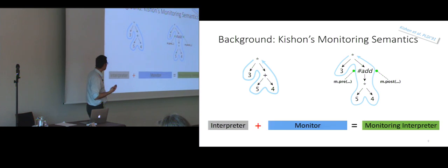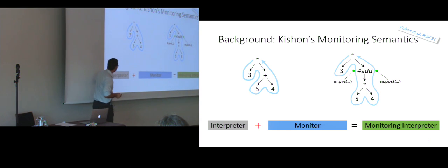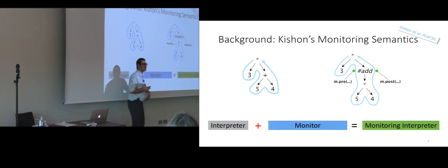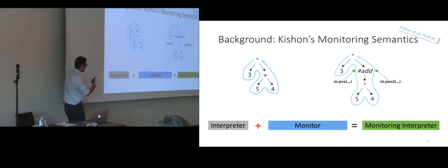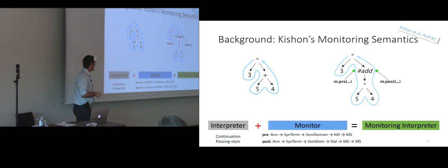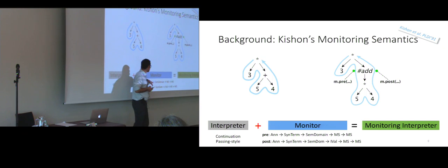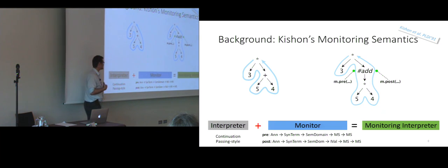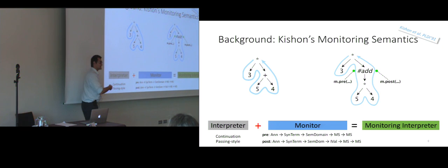The pre-processing operation happens before the evaluation of the node that you have annotated, and the post-processing evaluation happens after. This way you can observe the results obtained by the evaluation. They have nicely defined that in a formal setting. I can resume it in this highly abstract equation: we have a specification of an interpreter, to this specification we add the specification of a monitor, and at the end we get a monitoring interpreter. There are some quirks — the interpreter should be specified in continuation-passing style.